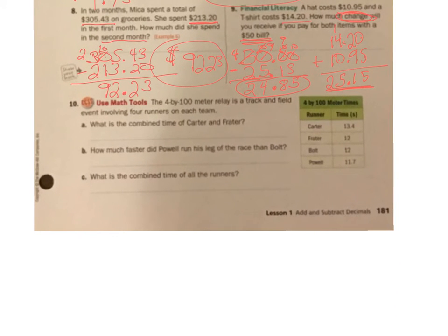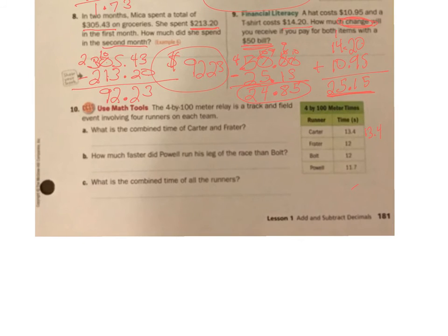Last one on the page. We have a 4x100 relay. We have Carter here, Carter with 13.4. We have Freighter with 12. And then we have Bolt, 12. And then we have Powell, 11.7. So let's look at this question. What is the combined time of Carter and Freighter? That tells me I'm probably going to add something. Carter and Freighter. I have 13.4 plus 12, and I can put a 0 there. It doesn't change it, but it has all place values now. 4 plus 0 is 4. My decimals drop down. 3 plus 2 is 5. And 1 plus 1 is 2. So the combined time is 25.4 seconds.